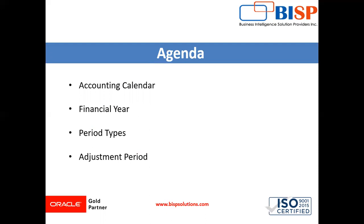In Oracle Fusion, we have many applications like GL, AP, AR, Inventory Management, Oracle Order Management, and Purchasing. Under these applications, we perform many business transactions. For example, in the Purchasing application, we capture many business transaction details like transaction dates, item name, item code, item description, item amount, and many more details. All this basic information is captured when we create any transaction in any application.